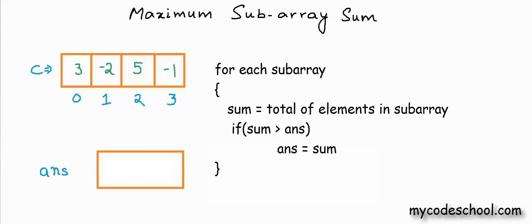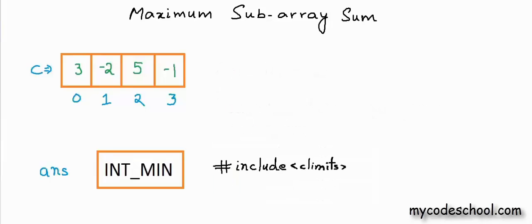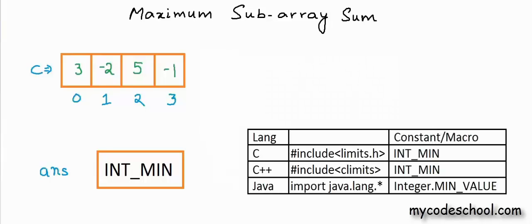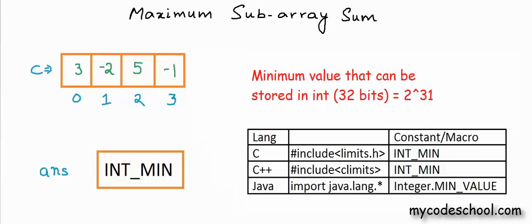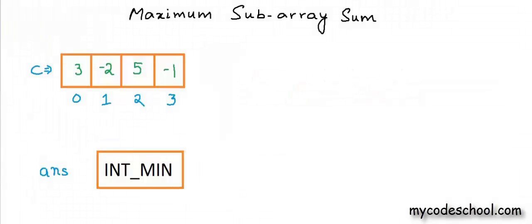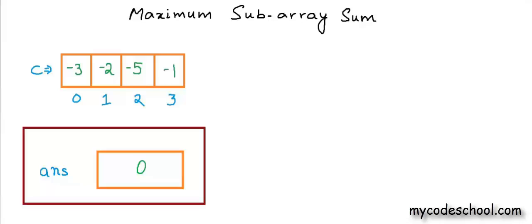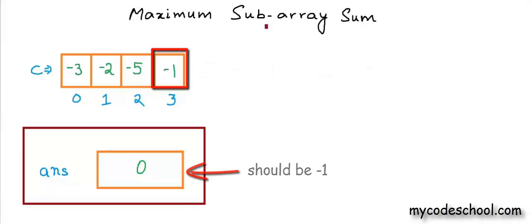Before we form subarrays and start finding the sum, we initialize ANSWER with a highly negative value. INTMIN is a macro available under the CLIMITS header in C++. This represents the minimum value that can be stored in an integer variable. Different languages have different ways to represent this constant. We start with a high negative value because we want a value which is lesser than all possible sums in ANSWER. For instance, if ANSWER was 0 and the array was filled with negative values, then finally we will have 0 in ANSWER and not the real maximum.